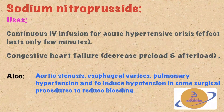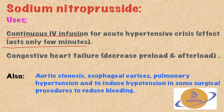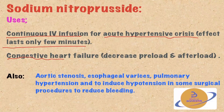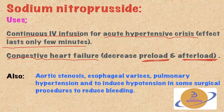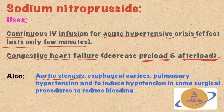The uses of sodium nitroprusside include continuous intravenous infusion — remember, the effect only lasts a few minutes — for acute hypertensive crisis. Also, you can use it for congestive heart failure, because it decreases the preload and the afterload, which helps to improve the function of the heart. Other uses include aortic stenosis, because decreasing the preload and afterload will help decrease the work of the heart.